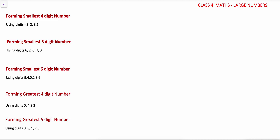The concept of writing the smallest number using any digits is to write all the digits in the ascending order. For example, forming the smallest 4-digit number using digits 3, 2, 8, 1 — we write them in ascending order: 1, 2, 3, 8. So 1238 is the smallest 4-digit number formed using digits 3281.